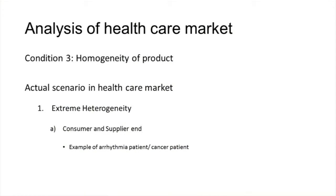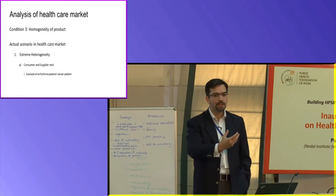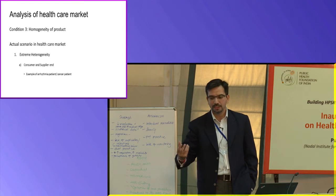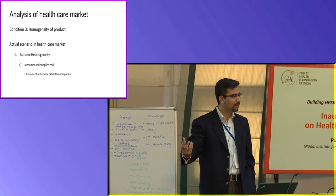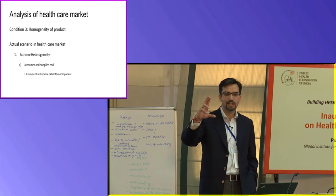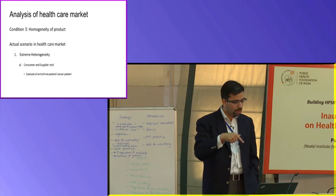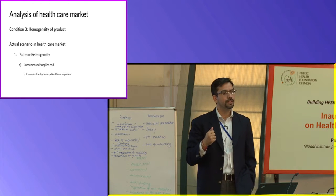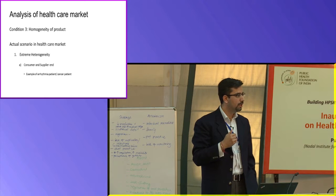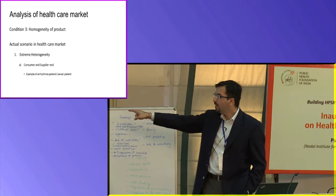The third condition is the homogeneity of product. In the case of other goods like a vegetable market, you still have potatoes which look alike, tomatoes which look alike, and you are very easily able to differentiate which is a good potato and which is a bad one. You look at a banana and you know the size is good, it is not very soft — this is a good one.